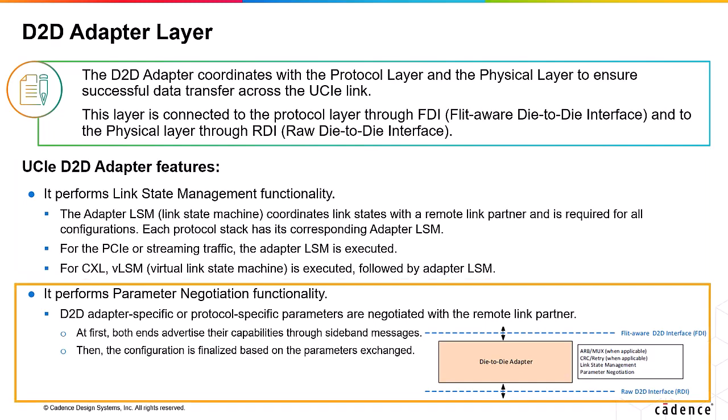It also performs parameter negotiation functionality. D2D adapter-specific or protocol-specific parameters are negotiated with the remote link partner. At first, both ends advertise their capabilities through sideband messages, and then the configuration is finalized based on these exchanged parameters.